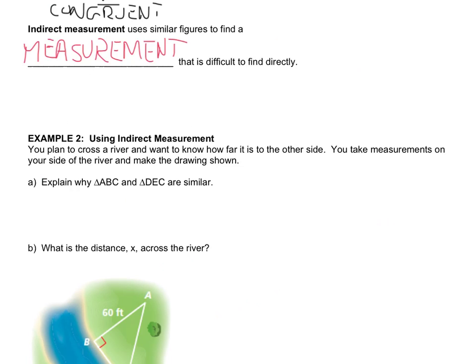So, how am I going to use indirect measurement? Well, here's an example. We are planning to cross a river, and we want to know how far it is to the other side. You take measurements on our side of the river and make the drawing shown. Well, first we need to know, why is ABC and DEC similar?